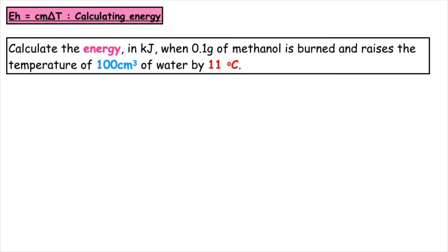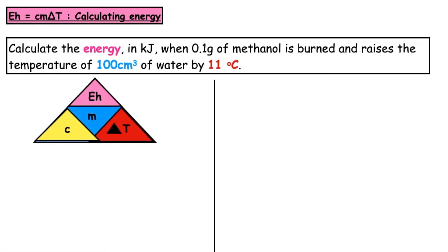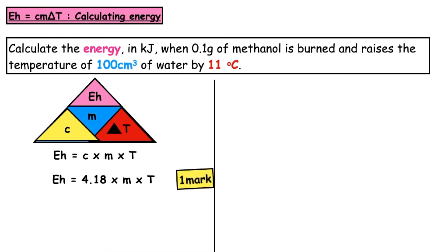Let's have a go at a worked example. The question asks us to calculate the energy in kilojoules when 0.1 grams of methanol is burned and raises the temperature of 100 centimetres cubed of water by 11 degrees. First, we write out the correct formula. They want us to calculate energy, so Eh is equal to CmΔT. We substitute in the constant C as 4.18 from our data booklet — that gets us one mark.